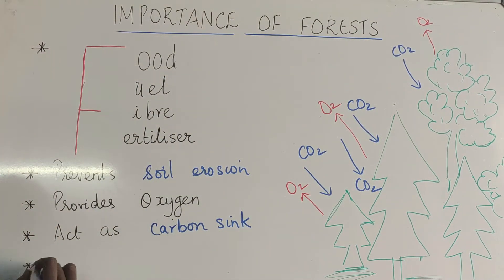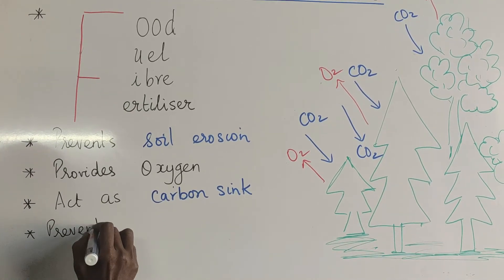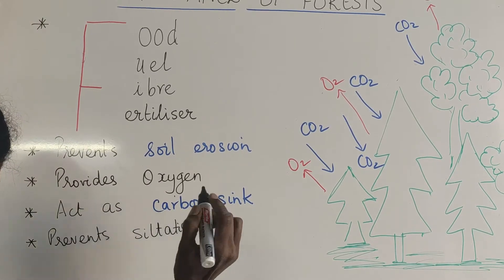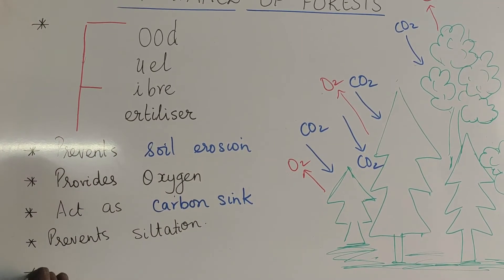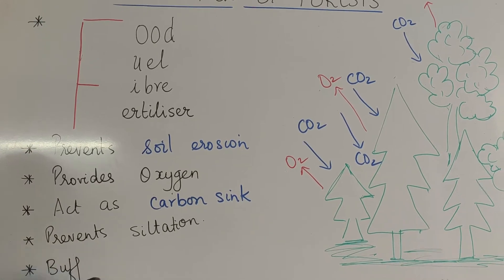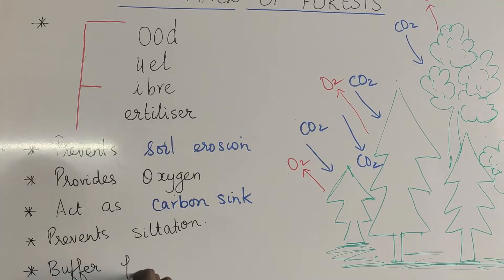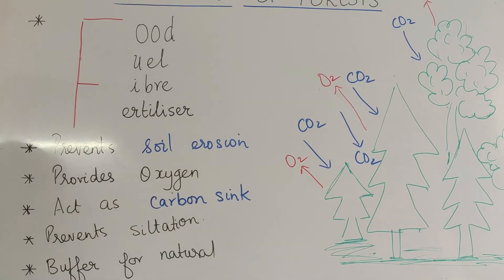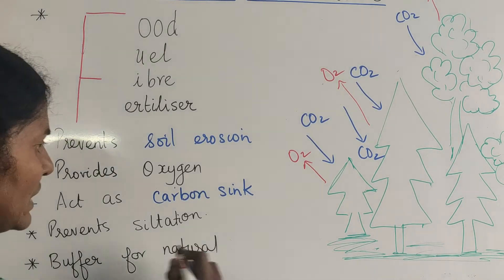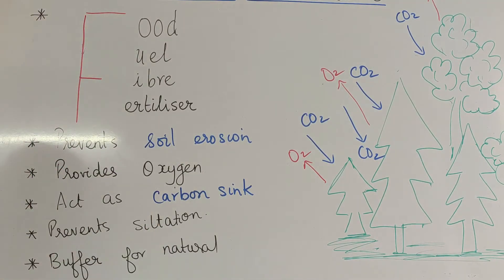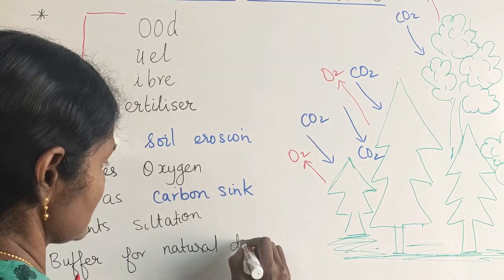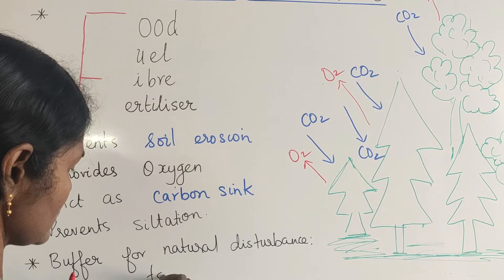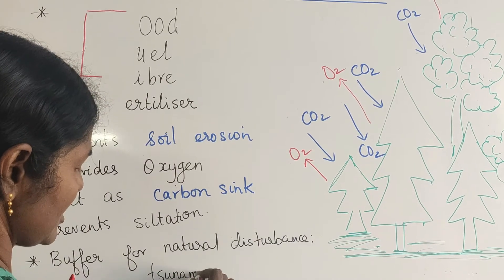Forests also prevent siltation. They act as a buffer for natural disturbances. When there is a natural disturbance like a tsunami or floods, the forest acts as a preventive boundary or barrier. These are the main important things about forests.